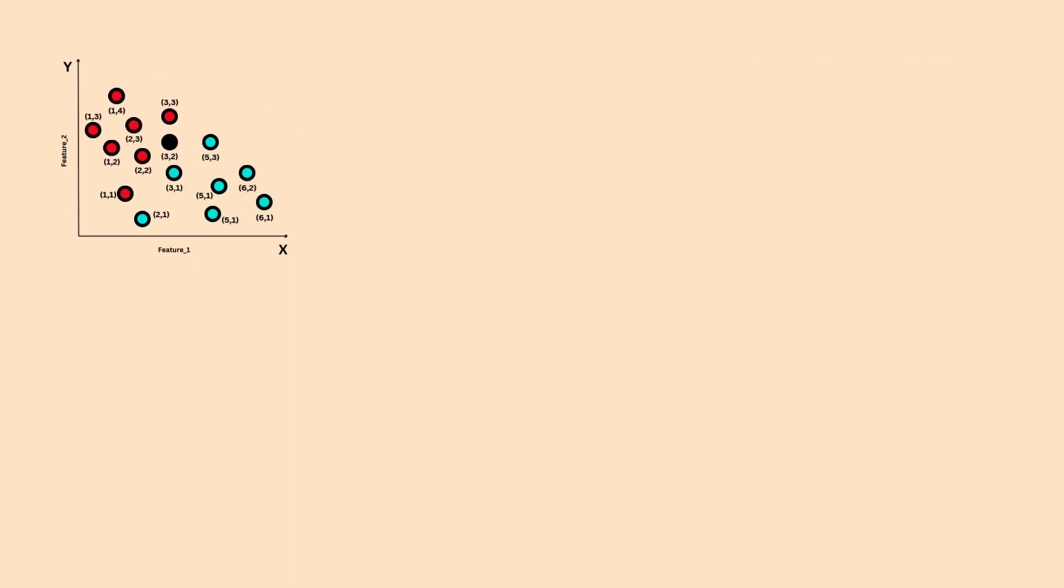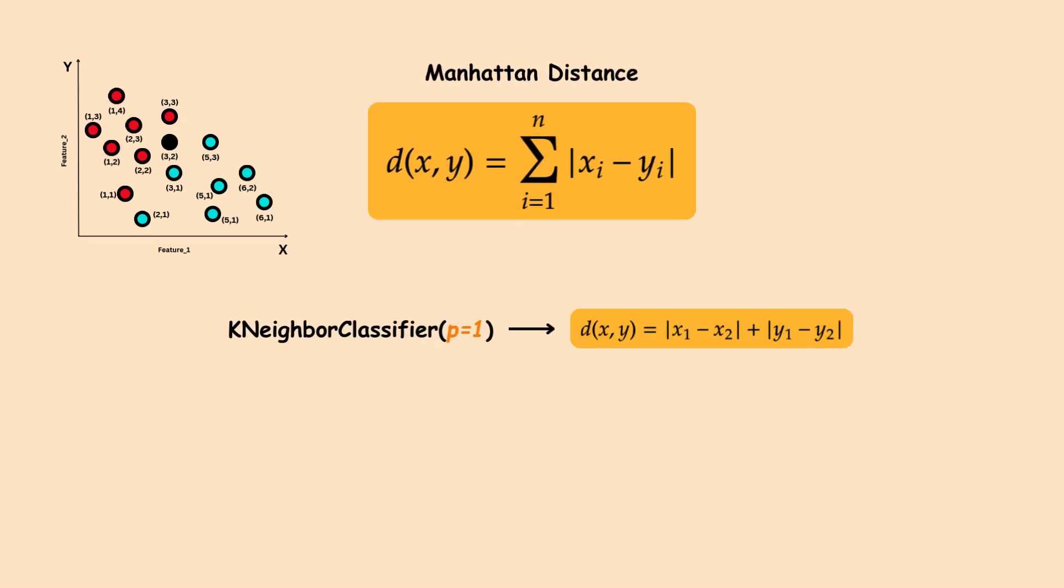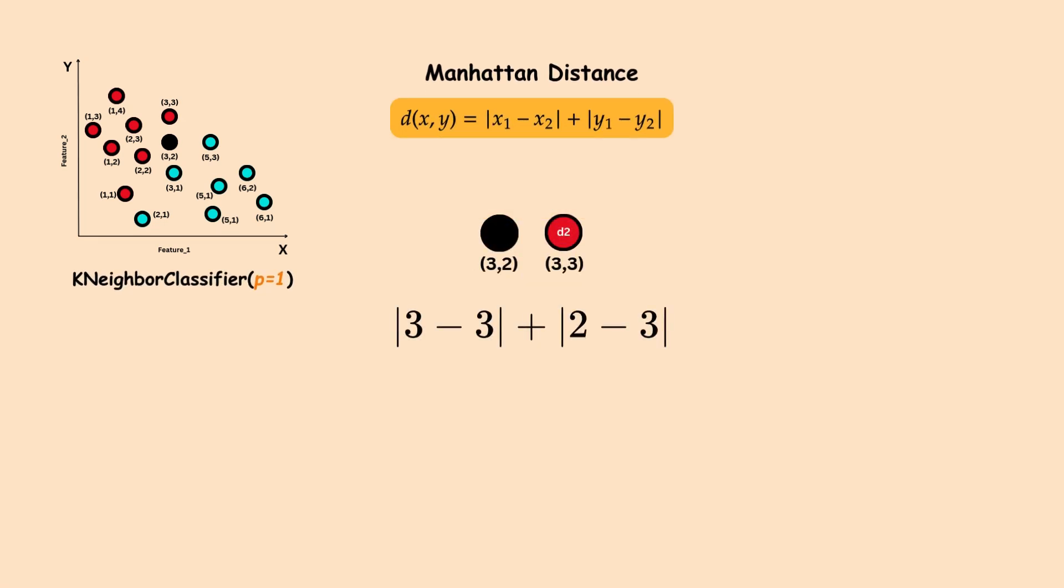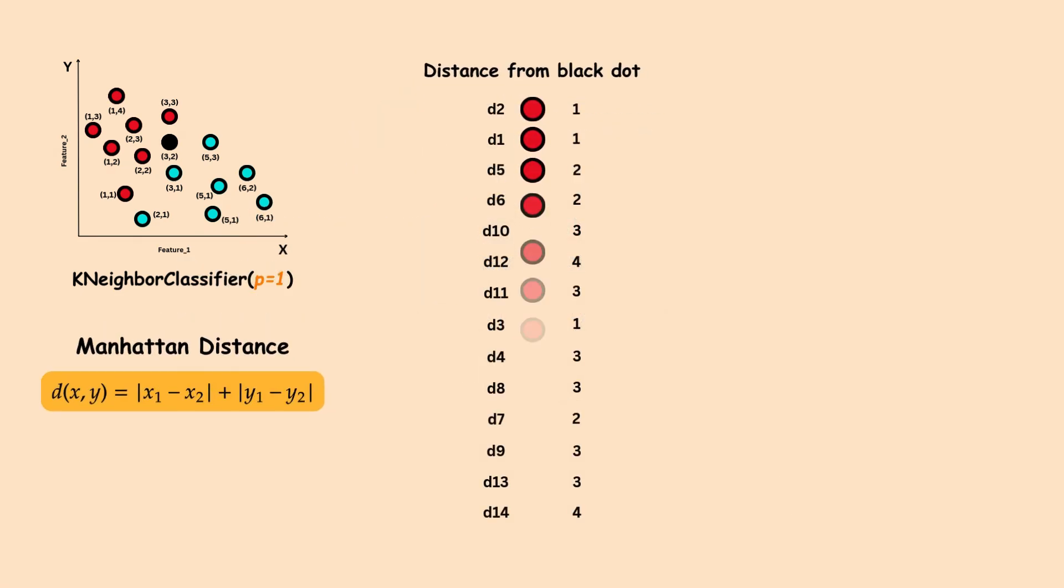Let's calculate the distance using the Manhattan metric. For this, we set the hyperparameter P equal to 1. In this, we calculate the sum of the absolute differences between the coordinates. Once we do this for all points, we sort the distances in increasing order and pick the five closest neighbors. The point is then classified on the majority vote.